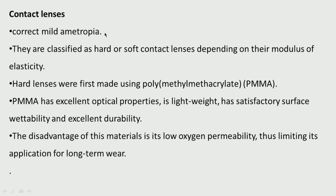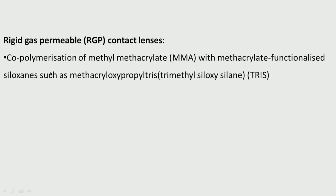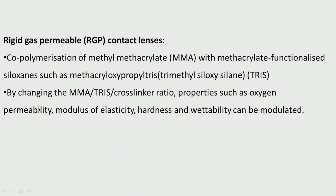Contact lenses are mostly for correcting mild ametropia. Hard lenses use polymethyl methacrylate (PMMA) — they have excellent optical properties, are lightweight and have satisfactory surface wettability. The main disadvantage is very low oxygen permeability, so patients cannot wear them for a very long time. Rigid gas-permeable contact lenses were developed by copolymerizing methyl methacrylate with methacrylate-functionalized siloxanes such as trimethylsiloxysilane. By changing the cross-linker ratio, oxygen permeability, elasticity, modulus of elasticity, hardness and wettability can all be modified.